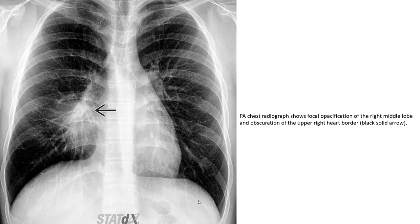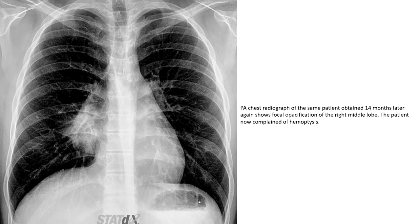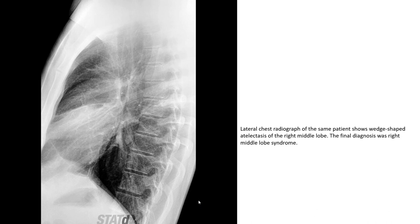PA radiographs show full opacification of the right middle lobe and obscuration of the right heart border, as indicated by solid arrow. Another lateral chest radiograph shows an anterior wedge-shaped opacity consistent with collapse of the lobe, indicated by solid arrow. Lateral chest radiograph of a patient shows wedge-shaped atelectasis of the right middle lobe, finalizing the diagnosis of right middle-lobe syndrome.